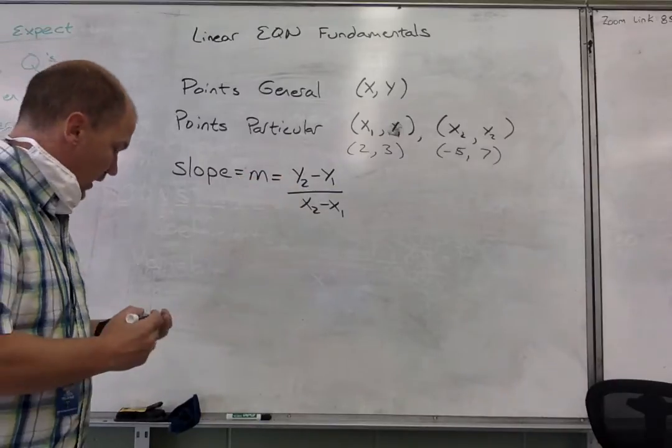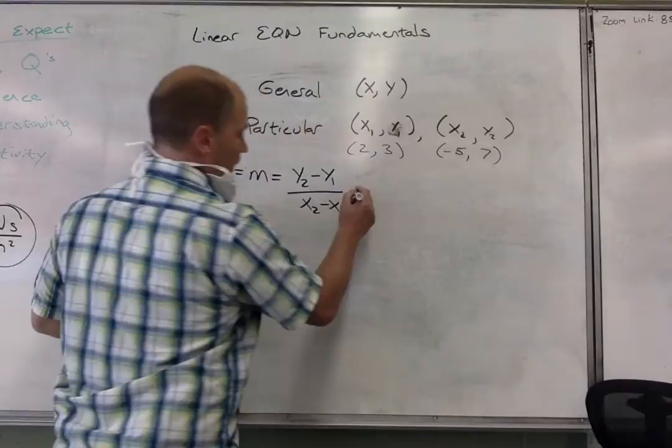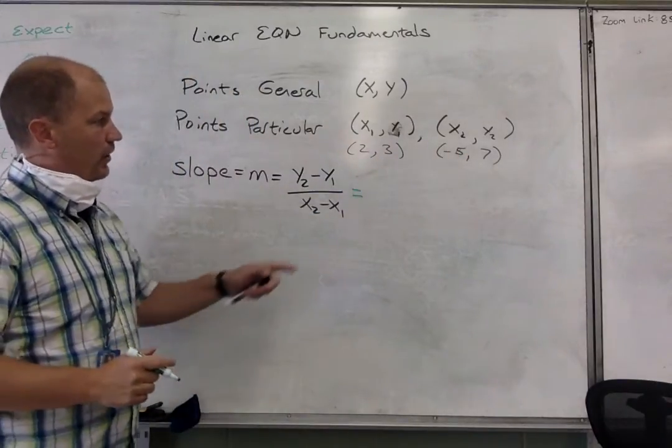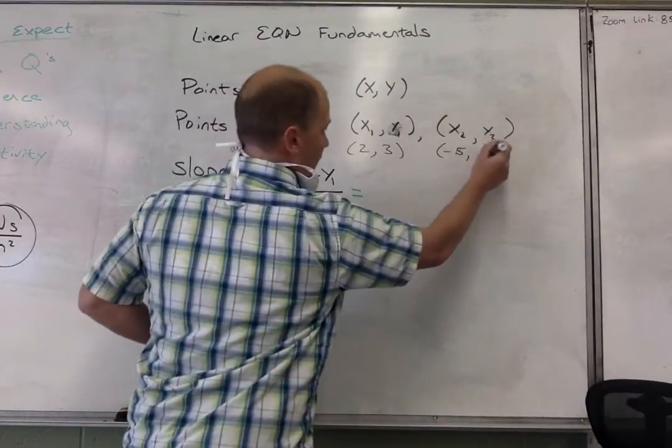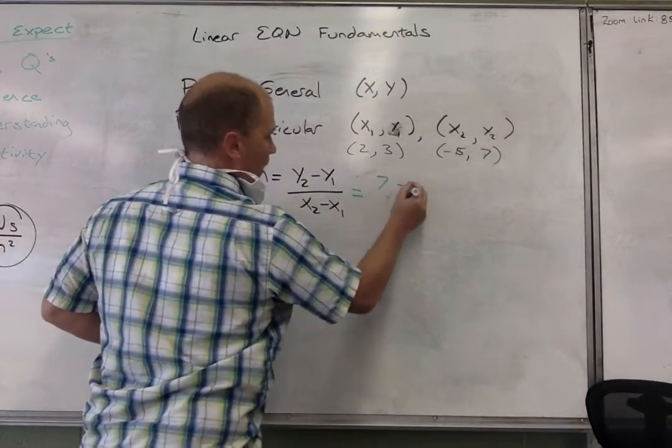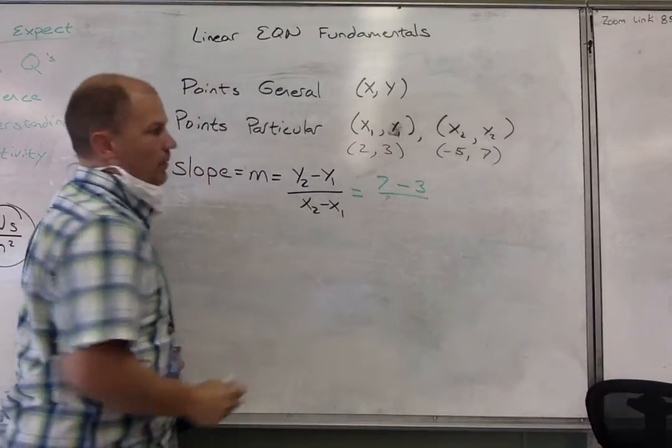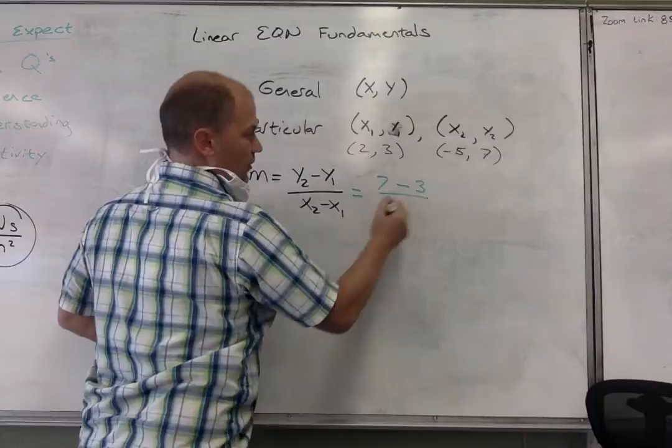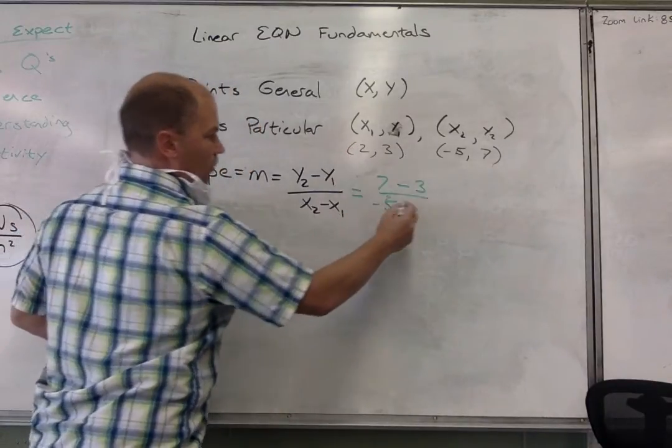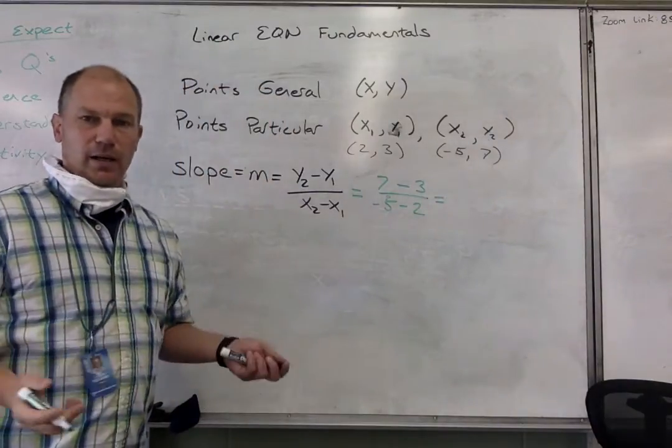So in particular, if I wanted to calculate the slope between these two points, I could just look at it and go, y2 is 7 minus y1 is 3. That's divided by x2, which is negative 5, minus x1, which is the number 2.